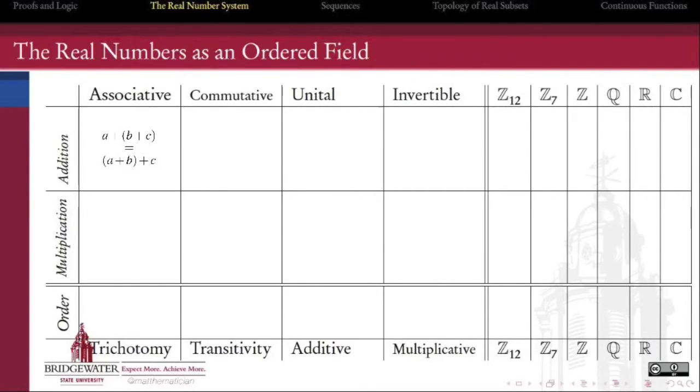First, we want our system to be an abelian group under addition. That is, we need an associative, commutative, unital, and invertible addition operation.